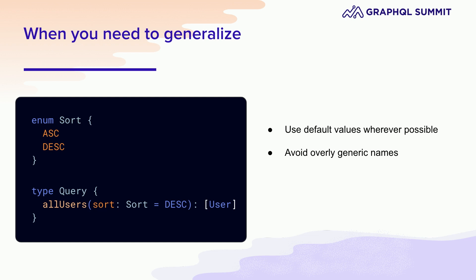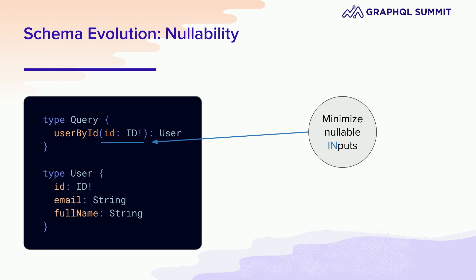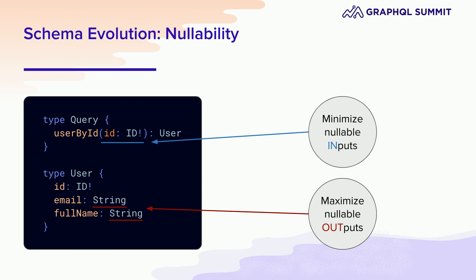Another tip is to avoid overly generic names. In this case, I've called this 'all users' — it's still somewhat generic, but it's better than just 'users.' We've reserved some namespacing and made it clearer what we're trying to do. For input parameters, we want to require them as much as possible and minimize nullable inputs. It's the opposite for output types — we actually want to maximize nullable fields. This will conflict with client developers, who typically want things required, but keeping outputs nullable gives schema authors the most flexibility to move forward.